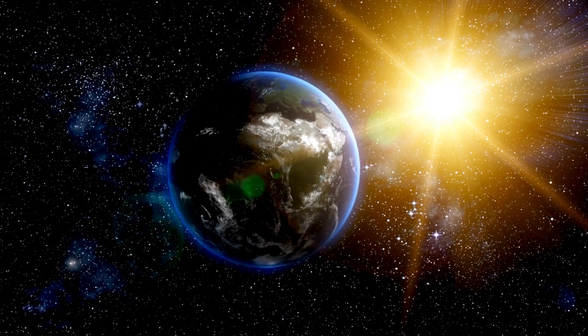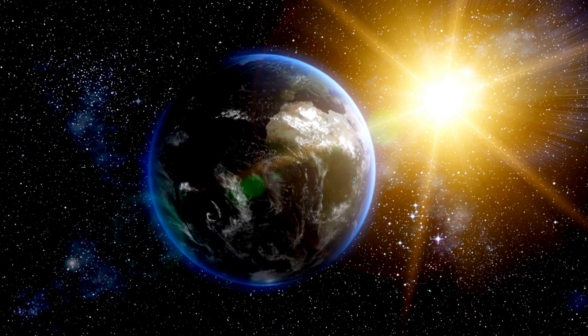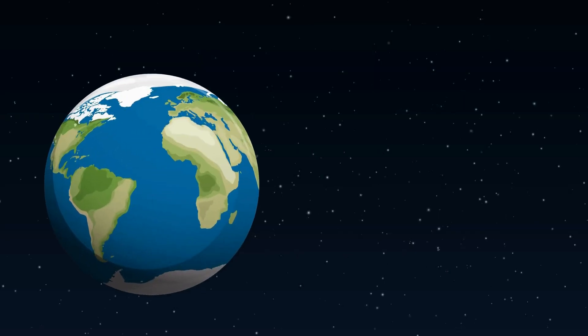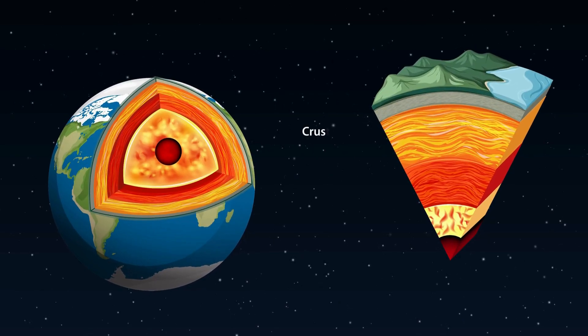To understand how Earth developed its magnetic poles, we need to look at the structure of our planet. Earth has a solid inner core made of iron and nickel, surrounded by a liquid outer core. As the Earth spins...